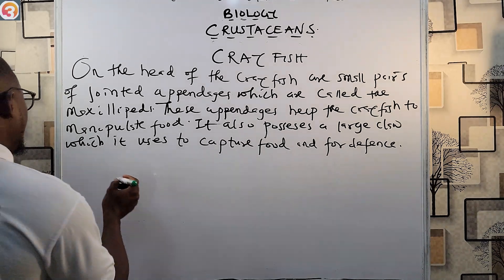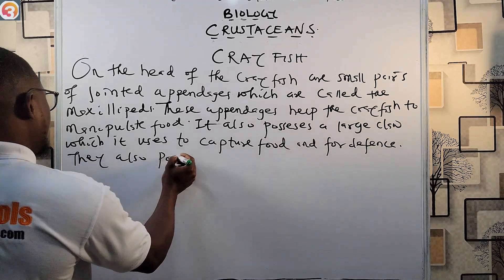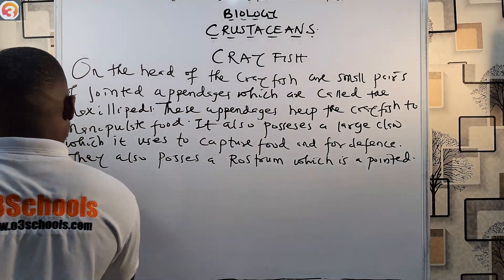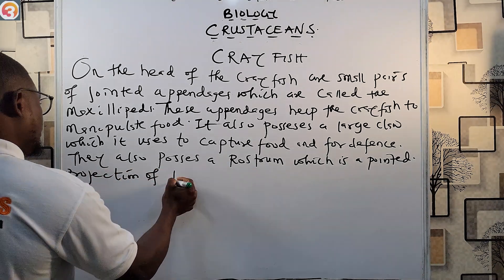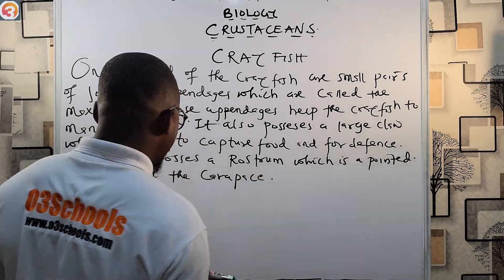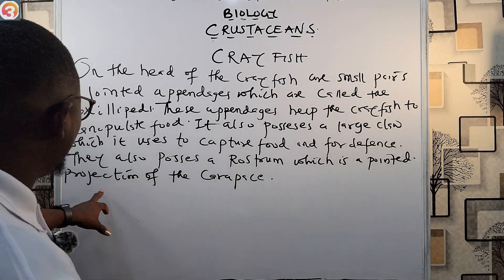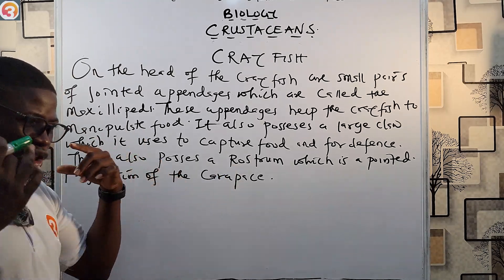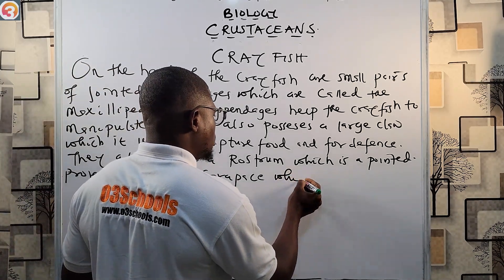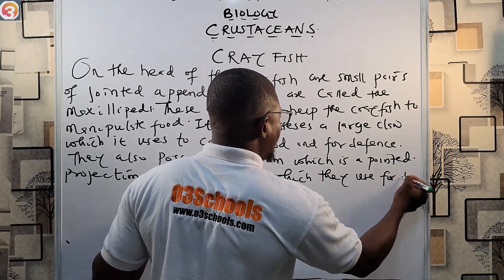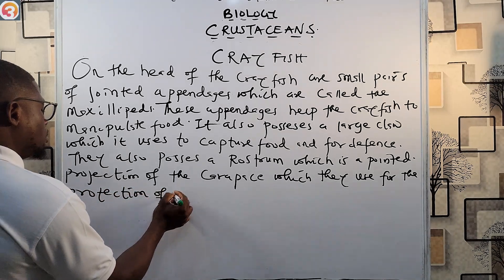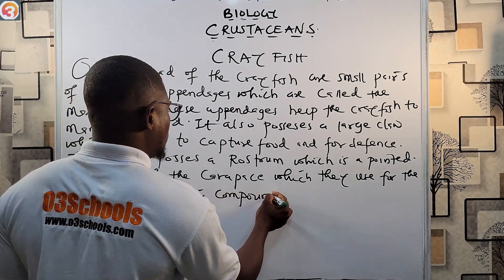They also possess what is called a rostrum, which is a pointed projection of the carapace. They use this rostrum for the protection of their compound eyes.